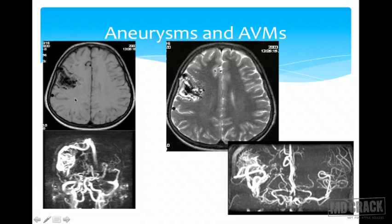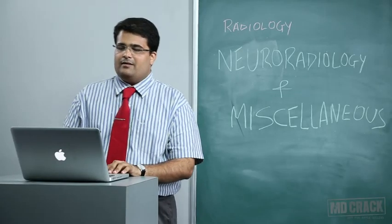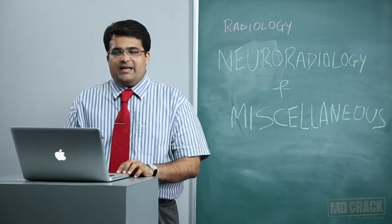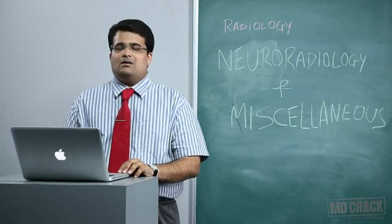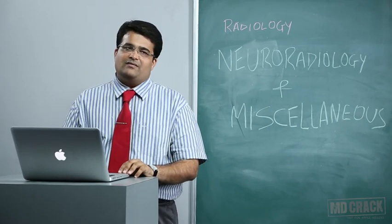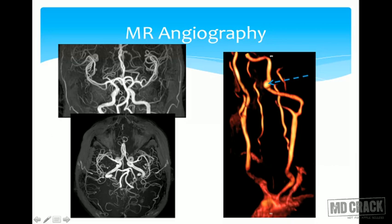Case examples of AVM: GRE images show blooming artifacts indicating an AVM. MR angiography demonstrates the vessels clearly and helps evaluate the arteriovenous malformation. The next step after MR angiography would be digital subtraction angiography (DSA), which can facilitate embolization of the AVM.